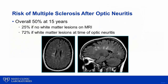The ONTT did a wonderful job of providing guidance for cases of typical optic neuritis. However, there were cases of atypical optic neuritis that were unexplained until more recently. We now have biomarkers of optic neuritis, offered by the Mayo Clinic Neuroimmunology Lab, that help explain many cases of atypical optic neuritis, such as severe optic neuritis with poor recovery, bilateral optic neuritis, prominent disc edema, and relapsing optic neuritis.